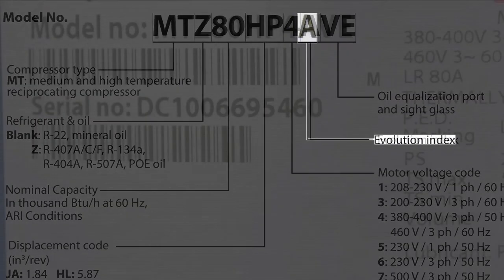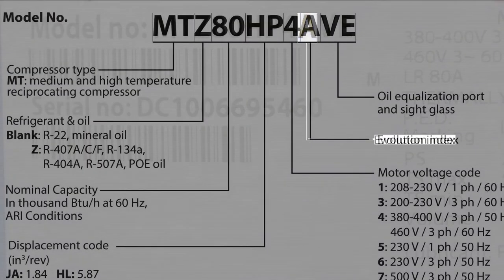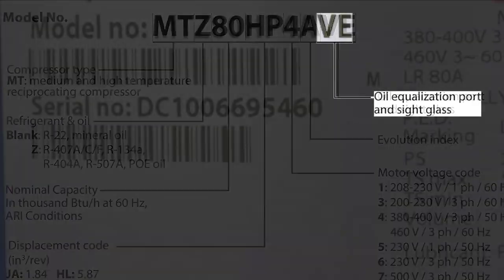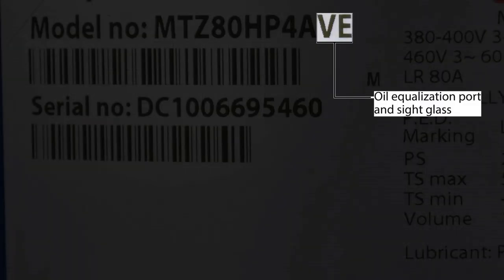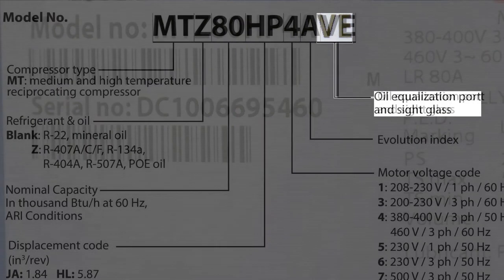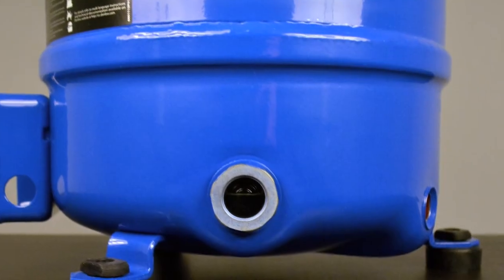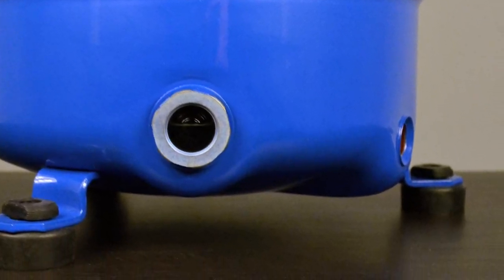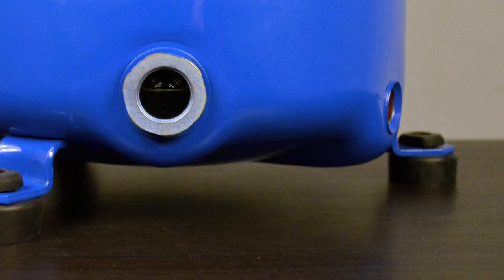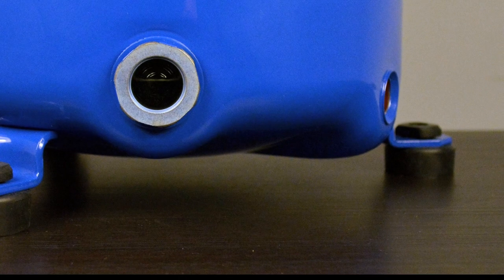The tenth digit signifies the evolution index. The first evolution can either be blank or the letter A. The last two digits of the model number signify the version index, though MT-MTZ compressors only have one version, VE, which specifies an oil equalization port and sight glass. In addition, all MT-MTZ compressors have rotolock fittings.